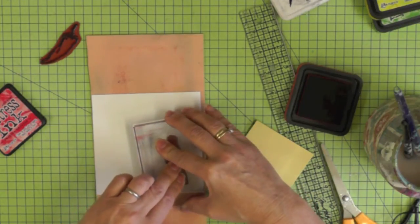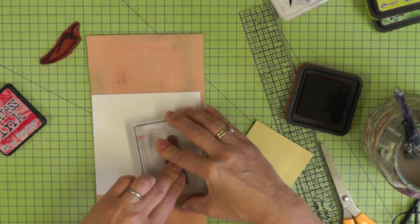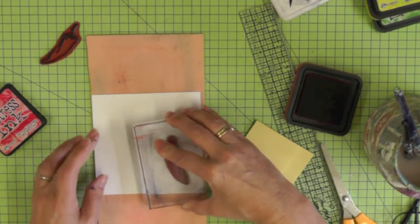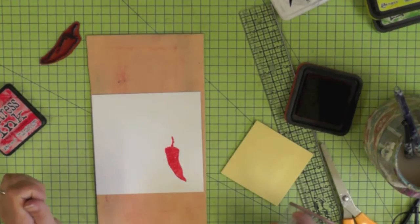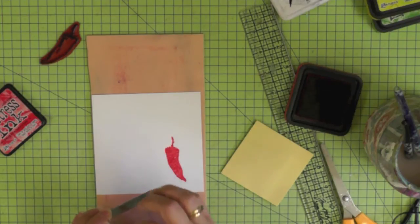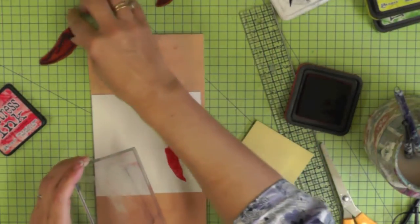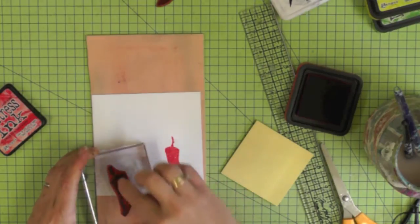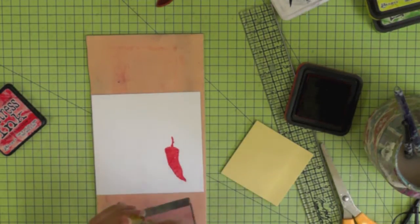Position your stamp or your chili in the bottom right hand corner of your card. This will give us our red chili ready to stamp the outline on top of. As you can see it gives a lovely filled in image. Now we need to use a stamp positioner to line up the lined chili or the outline chili on top of our red chili.